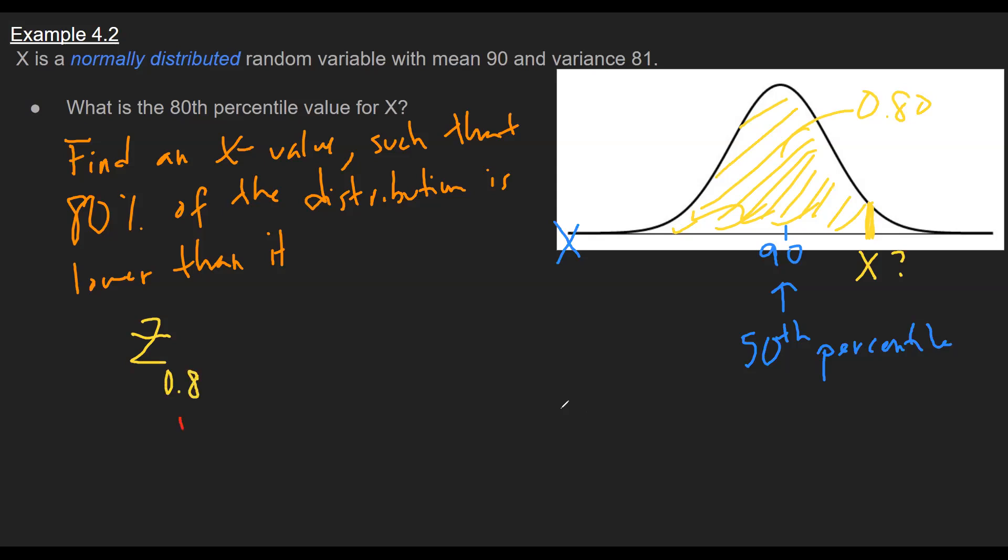And remember, this is not a Z score because I'm trying to find the Z score. I'm looking in the middle of my Z table and then looking out to the margins to find the Z. And if I do this, and if you guys take out your Z table, you can see that the closest value we get is a Z value of 0.84. And then from here I'm just going to go through some algebra because remember our relationship between Z and X is this equation here.